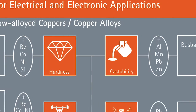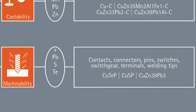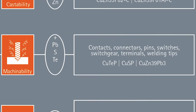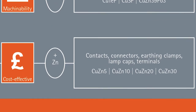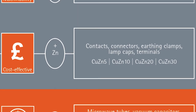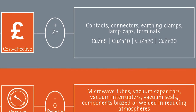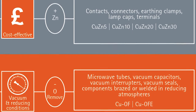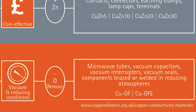For components with complex shapes, castability is important. Where extensive drilling or turning is needed, machinability is key. When the highest conductivity isn't essential, cost-effective options exist for components such as pins and terminals. For certain operating conditions, such as under vacuum and in processing operations like brazing in a reducing atmosphere, the removal of oxygen is required.